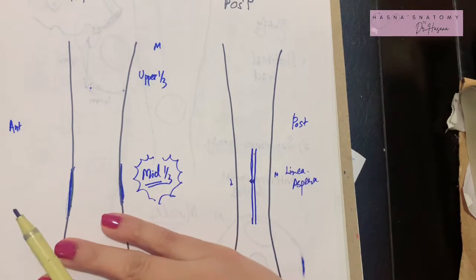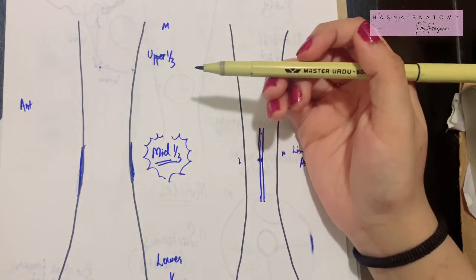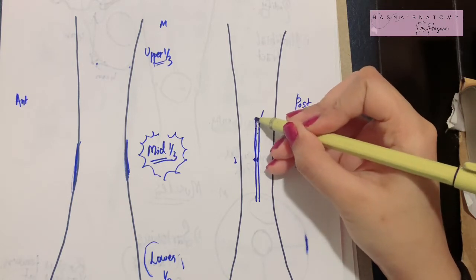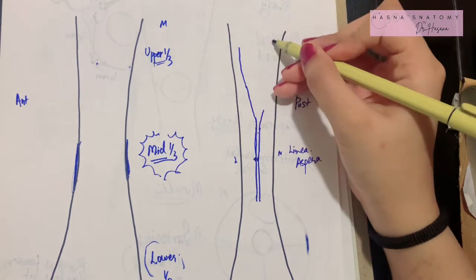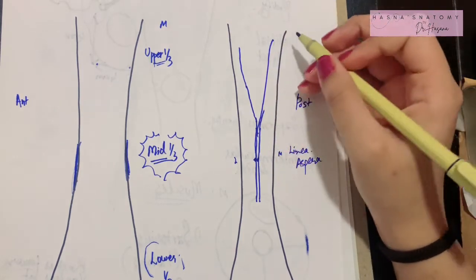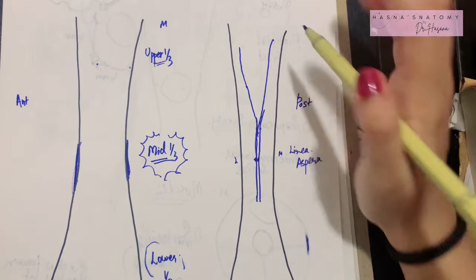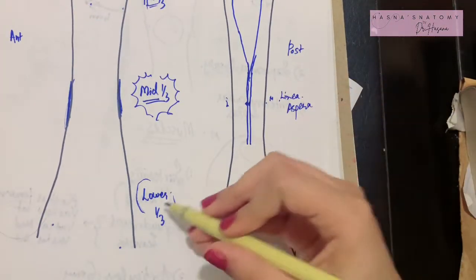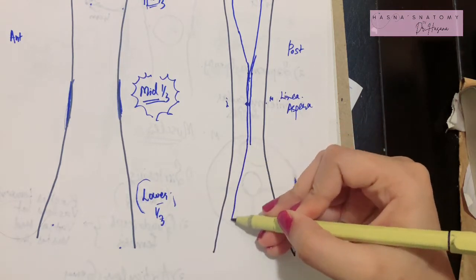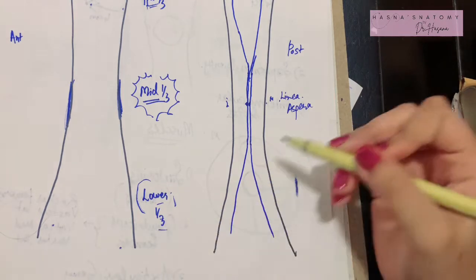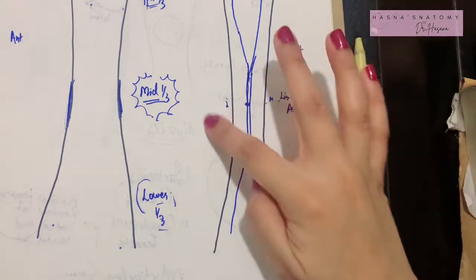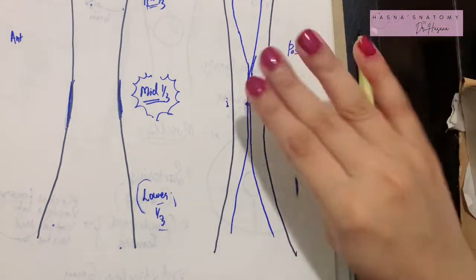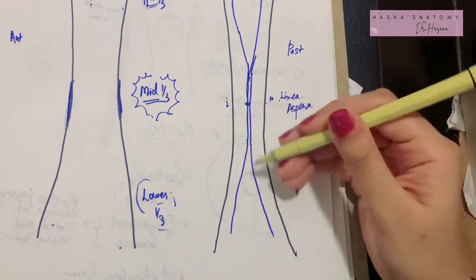Now let's talk about the upper and lower thirds of the shaft. As the linea aspera goes above, it splits or diverges to form two more borders. Hence, in the upper one-third there are four borders rather than just three. Similarly below, going towards the lower one-third, it splits up to form two more borders. Hence the middle one-third carries three borders and three surfaces, but upper and lower carry four borders and four surfaces because the linea aspera splits up.